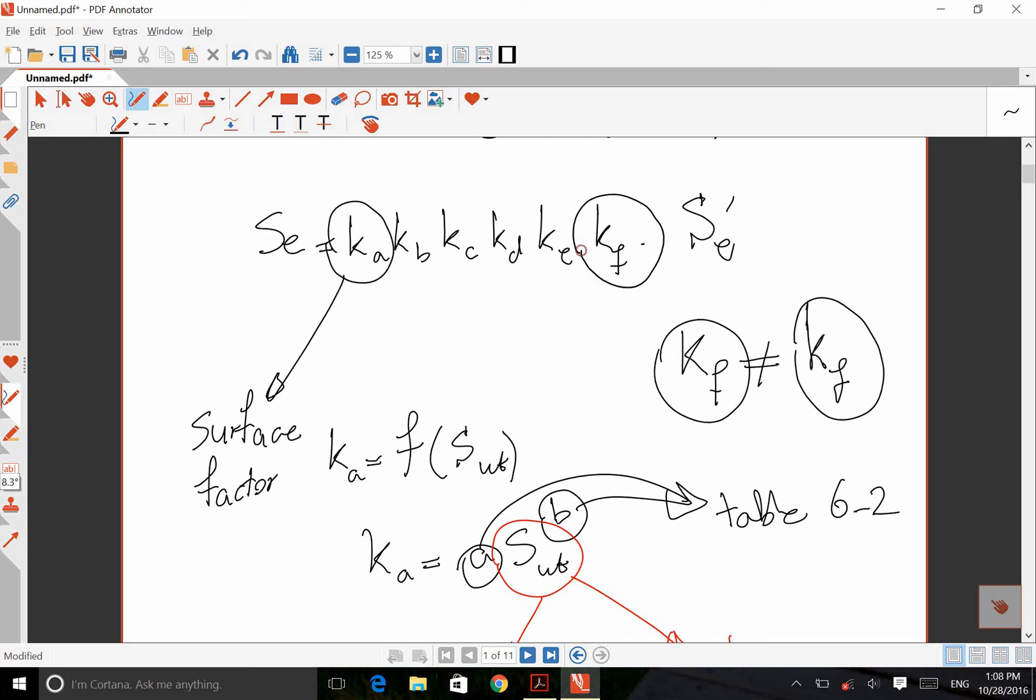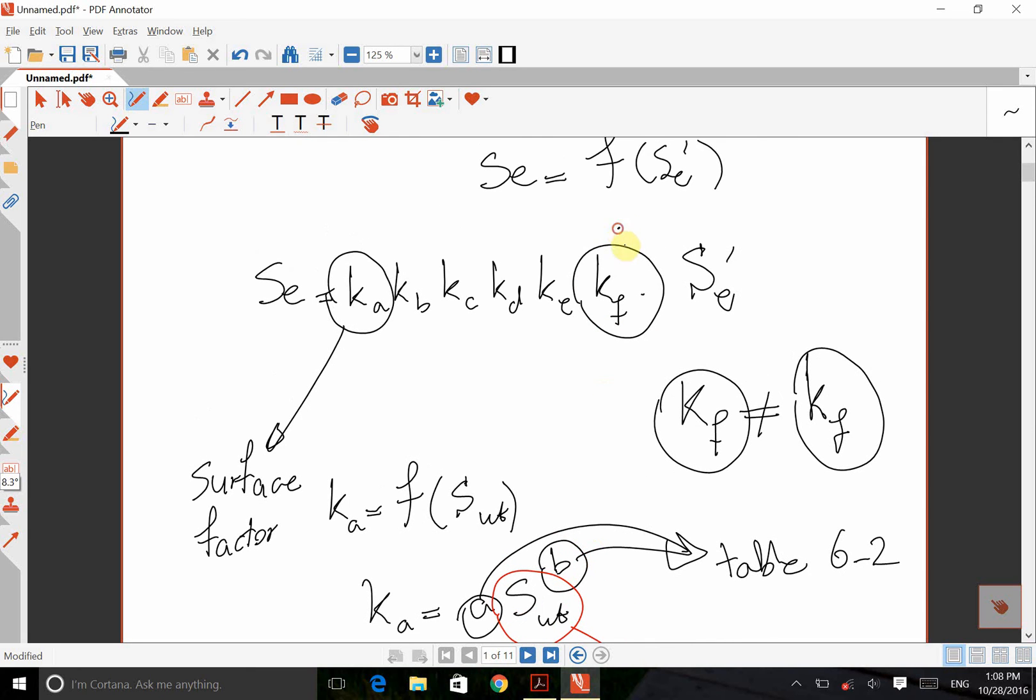For KF, this is miscellaneous factor, as I mentioned here. It's usually, most of the time, that's one. Unless it is given to you in the question, or it is said, or you can somehow figure out from the dynamic of the problem. But in 99%, this is one.